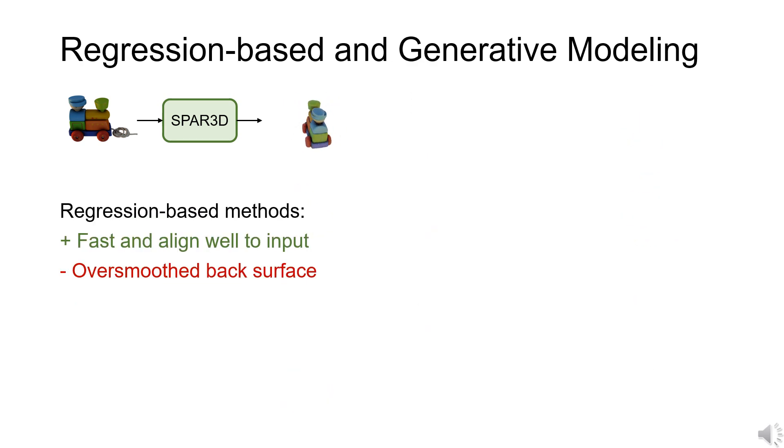Recent works have diverged into two directions, regression-based modeling and diffusion-based modeling. Regression methods efficiently infer visible surfaces but struggle with occluded regions.